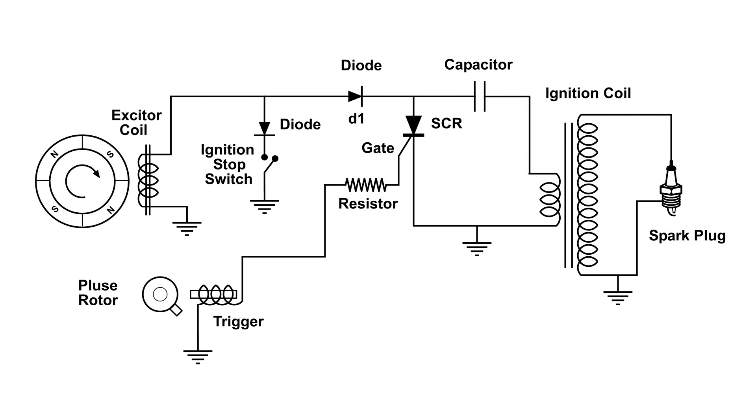And between those two is the SCR. That is the solid state device that triggers the discharge of the capacitor, which then produces a spark. That happens when the gate gets a signal from the trigger. To the right of the capacitor is the ignition coil and spark plug.